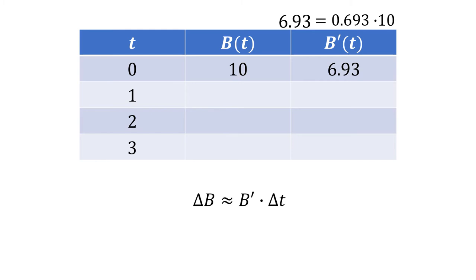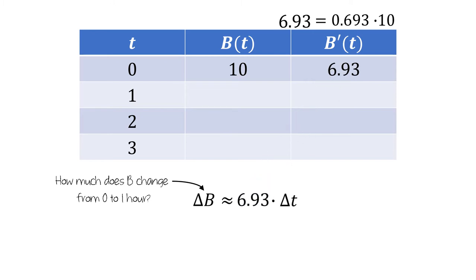Now let's use the relationship we saw at the beginning of the video. We want to know how much does b change from zero to one hour, which is what this symbol represents. We just computed a value for b prime, and from zero to one hour, the amount of change in time is one hour. So if the number of bacteria is increasing at a rate of 6.93 bacteria per hour, and they do this for an entire hour, then we should get an additional 6.93 bacteria. In our formula, multiplying tells us that there is an increase of 6.93 bacteria. Now, we have to be careful here — this is just an approximation rather than an exact value, because we're assuming that the rate b prime stays constant for the entire hour.